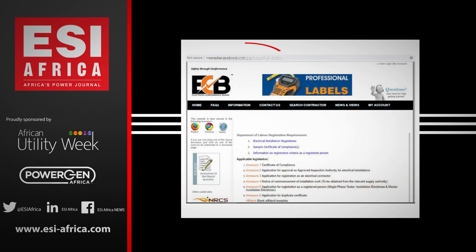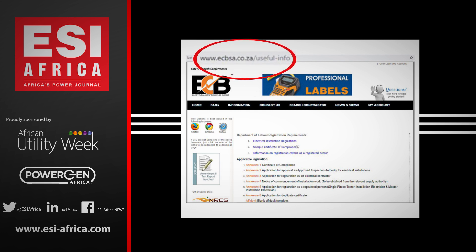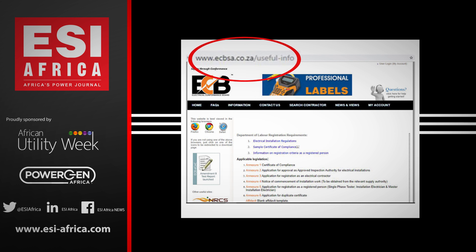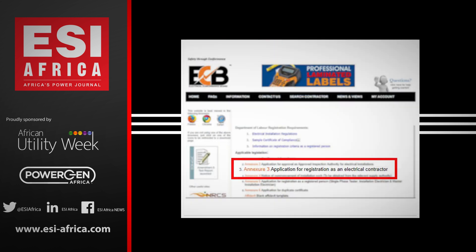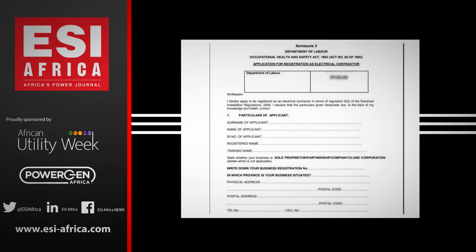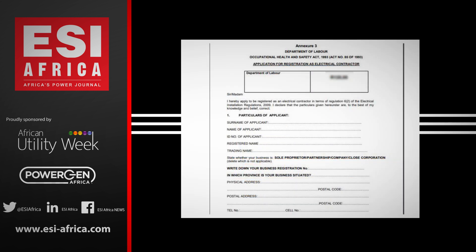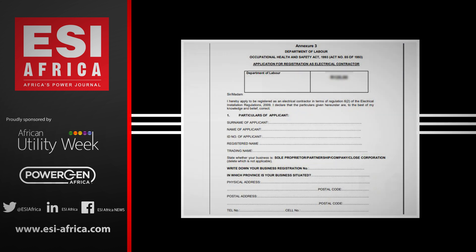The application to register as an electrical contractor can be found on the Electrical Contractors Board of South Africa, where you will see it listed as Annexure 3. Simply click on the link to be directed to the application page for you to print out and complete. You can contact the Department of Labor to find out how to submit and process your application.